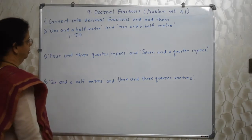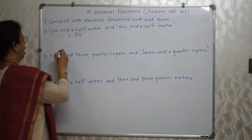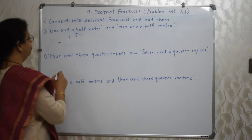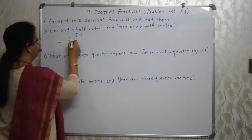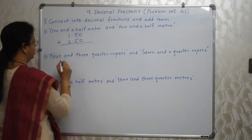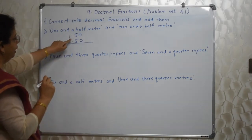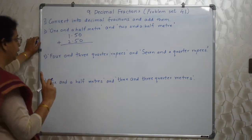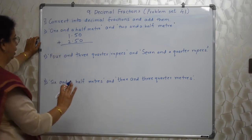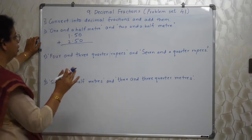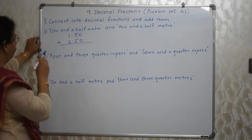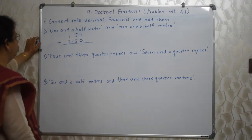Meters. And matlab add karna hai. Two and a half meters. Ek hi instruction hai idar — decimal point ke niche hi decimal point anna chahiye, idar ugar nahi, bilkul niche. Accordingly other digits you need to adjust.